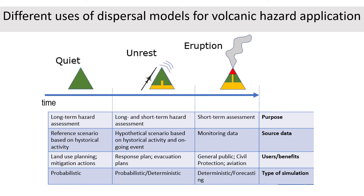The validity and reliability of model results become even more important when decisions are taken based on forecasting — for example, when evacuations are called because of expected heavy Tefra fallout, or because of the need to reroute airplanes due to volcanic ash in the atmosphere. What we see here is a scheme showing the potential usage of a dispersal code throughout the life of a volcano. When a volcano is in its quiet time, we might still use a numerical dispersal model to evaluate long-term impact, which we call long-term hazard assessment.